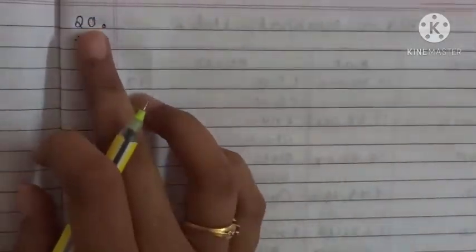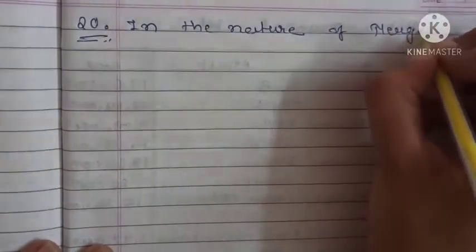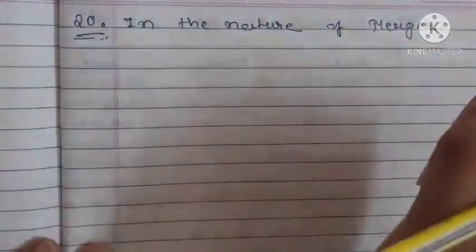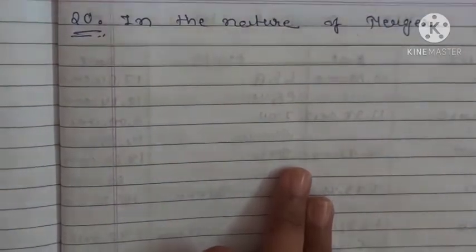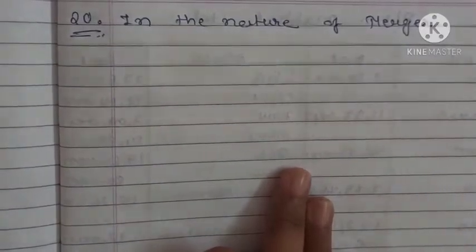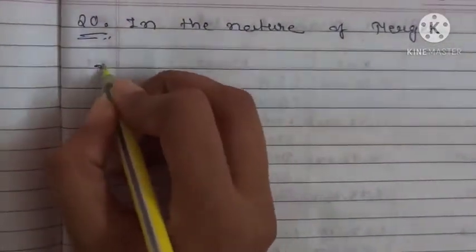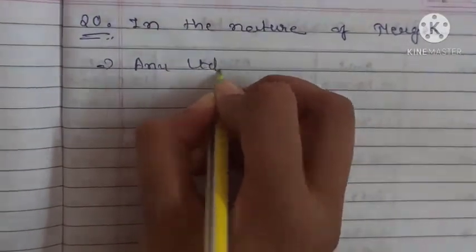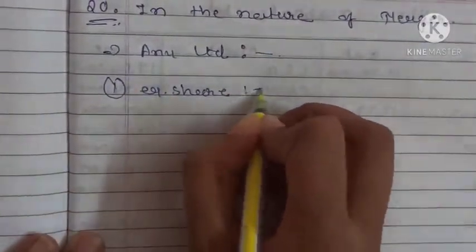We are starting with the practical number 20 calculation. First, we will do it in the nature of merger. Let's start the calculation of equity shares and preference shares. Starting with Anu Ltd — equity shares first. The term for equity shares is: one equity share for every two equity shareholders of Anu Ltd.